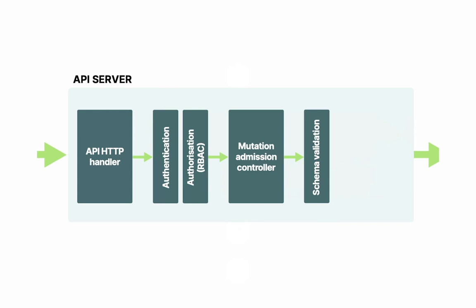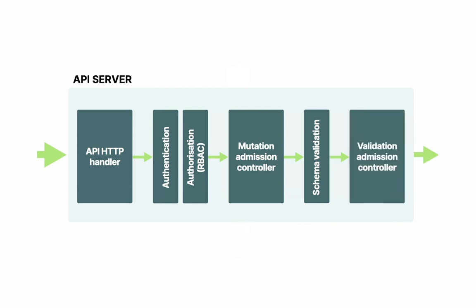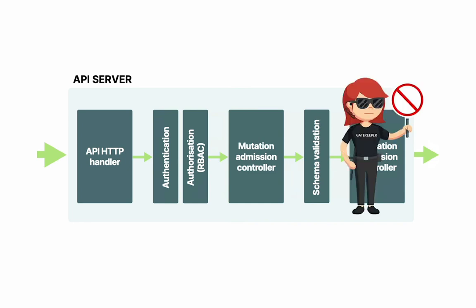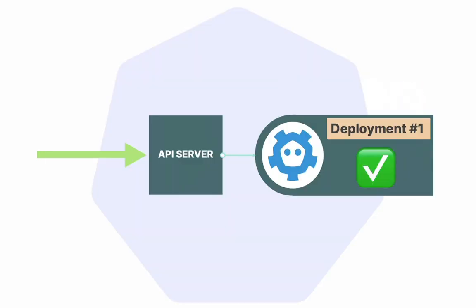Have you ever tried to deploy a pod in a namespace that doesn't exist? It usually comes back saying you're trying to deploy a pod in a namespace that does not exist. It is the validation admission controller that stops you from doing that. Or perhaps you're trying to deploy more resources than you have the quota for — the validation admission controller stops you again. It is acting like a gatekeeper. If you do manage to pass it, your resource is safely stored in etcd.